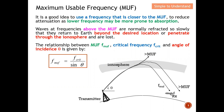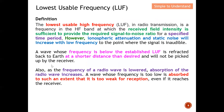The relationship between MUF, critical frequency, and angle of incidence is given by this equation. To compute the MUF frequency, you need the critical frequency — which I described earlier in the sky wave discussion — and you also need to know the angle of the incident wave. These are the parameters to calculate what is your MUF.